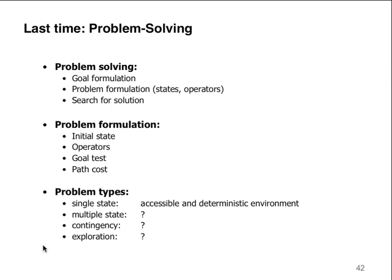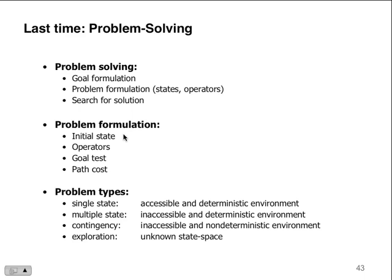Last time we looked at problem solving, and the problem solving had some characteristics associated with it — this is the problem framework. Other people refer to it by other names; it's a problem solving approach. We have goal formation, problem formation, states, operators, and the search for a solution. The problem formations deal with the initial state, operators, goal, test, path, and cost. This is vocabulary for you, which is why I'm going over it repeatedly — repetition is how you're going to remember this stuff. It's on slide number 43 of lecture 3.